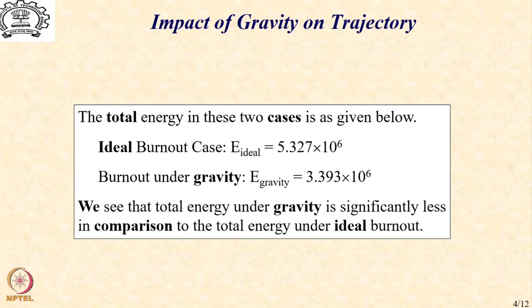The total energy under gravity is significantly less in comparison to the total energy under ideal burnout. So our hypothesis that gravity, being a conservative force field, would keep total energy constant is not justified — it is violated. Let us try and understand what has happened.